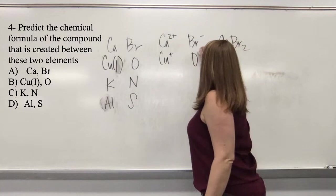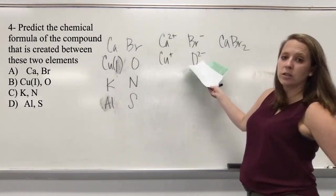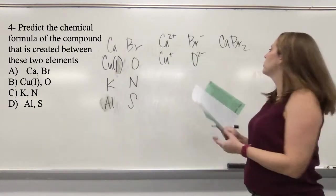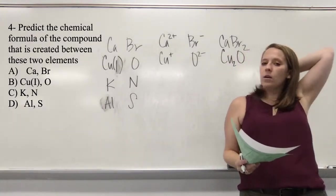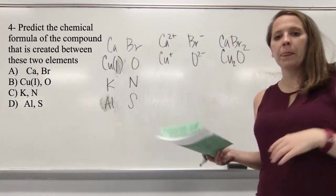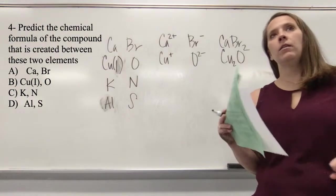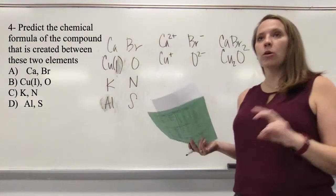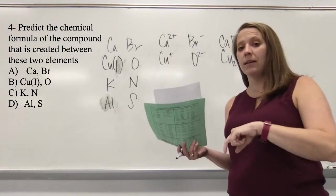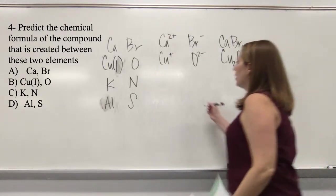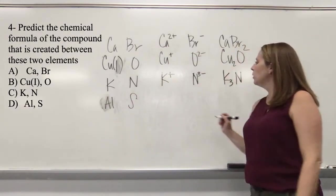For potassium and nitrogen: K⁺ and N³⁻ gives us K₃N. For aluminum and sulfur: Al³⁺ and S²⁻. Three plus and two minus don't cancel with just one of each. A lot of my students like to use the 'do-si-do' method — or the book calls it the Humpty Dumpty. The charges become the subscripts: so we get Al₂S₃. Two aluminums each at 3+, giving 6+; three sulfurs each at 2−, giving 6−. That gives a neutral molecule.